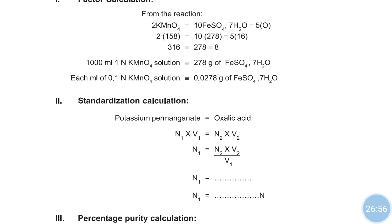For the factor calculation: each 1 ml of 0.1 normal KMnO4 solution corresponds to 0.0278 grams of FeSO4. KMnO4 molecular weight is 158, and 10 molecules of FeSO4 give a molecular weight of 278. So 1000 ml of 1 normal KMnO4 corresponds to 278 grams of FeSO4. By cross multiplication: 1 ml corresponds to 278 divided by 1000, multiplied by the normality found.